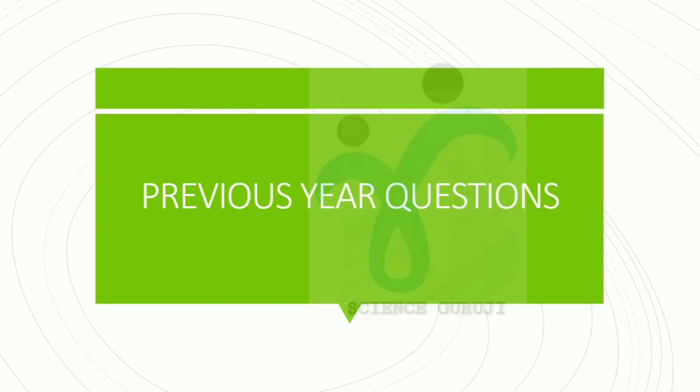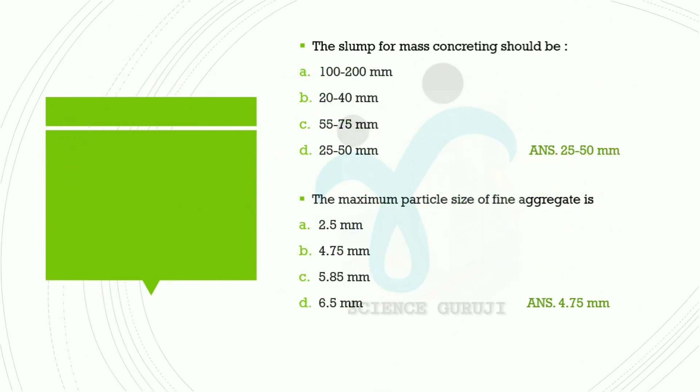Now let's answer some previous year questions. First question: the slump for mass concrete should be — Option A: 100–200 mm, Option B: 20–40 mm, Option C: 55–75 mm, Option D: 25–50 mm. Answer: 25–50 mm, that is Option D.